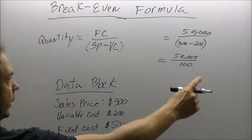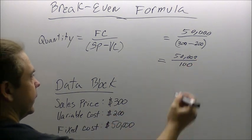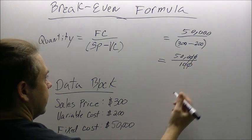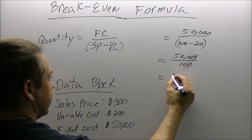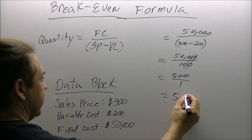Next step, we have zeros at the end upstairs and zeros at the end downstairs. You eliminate your zeros and it is going to equal $500 over $1, which is equal to $500.